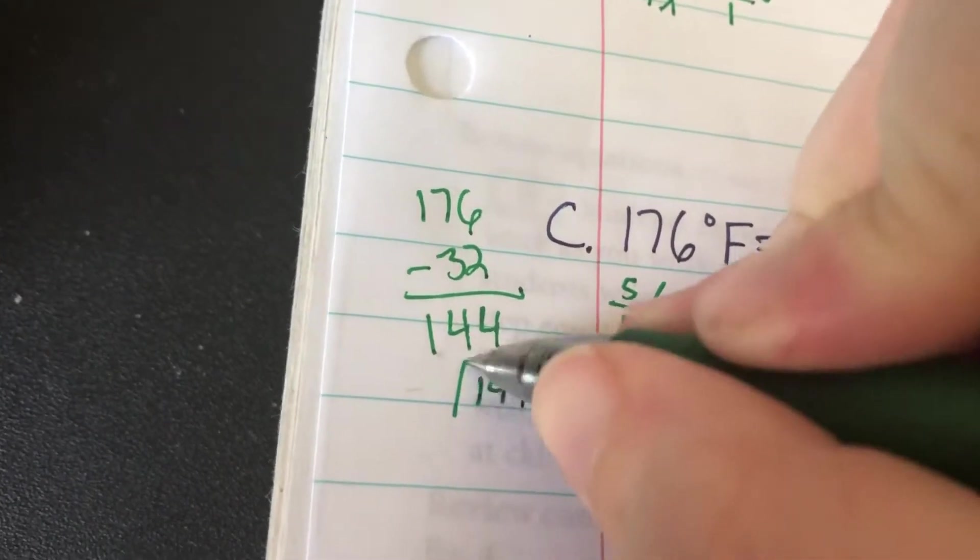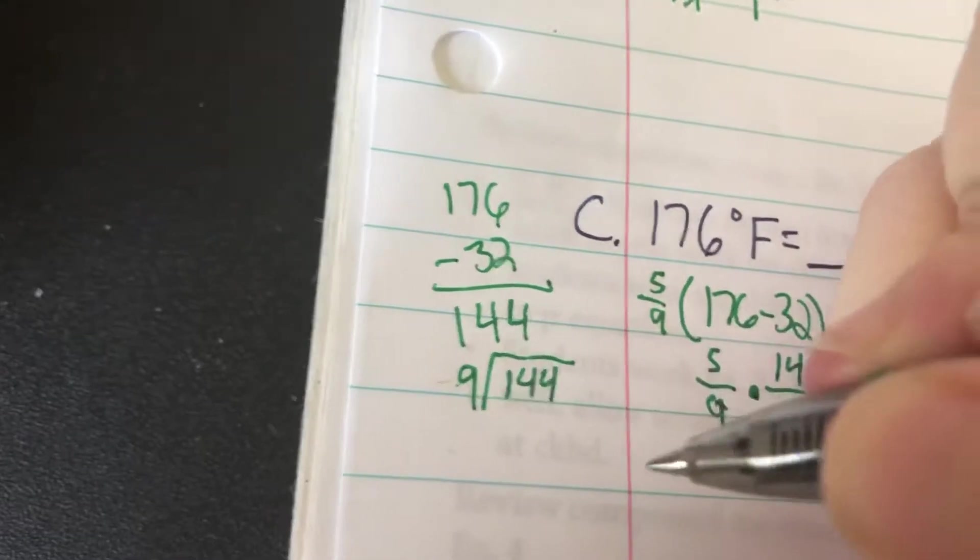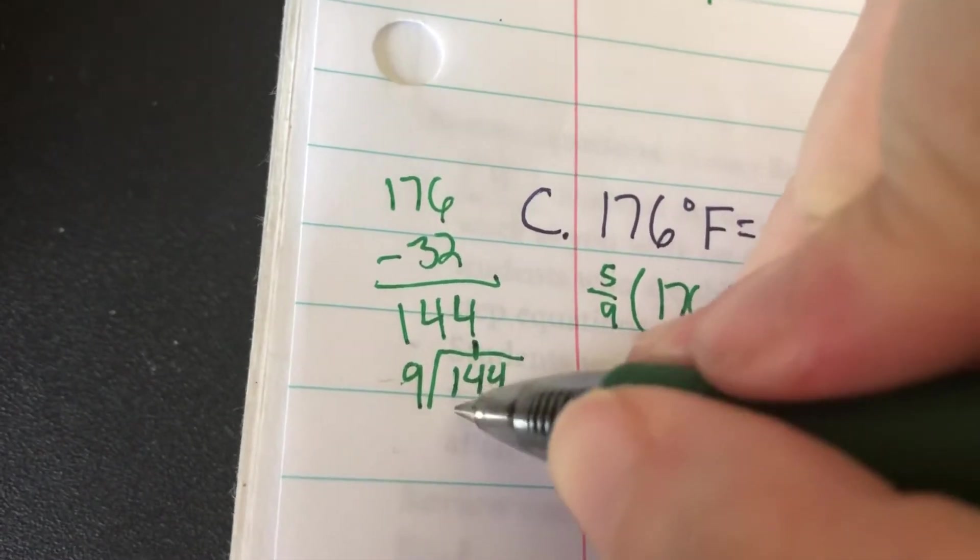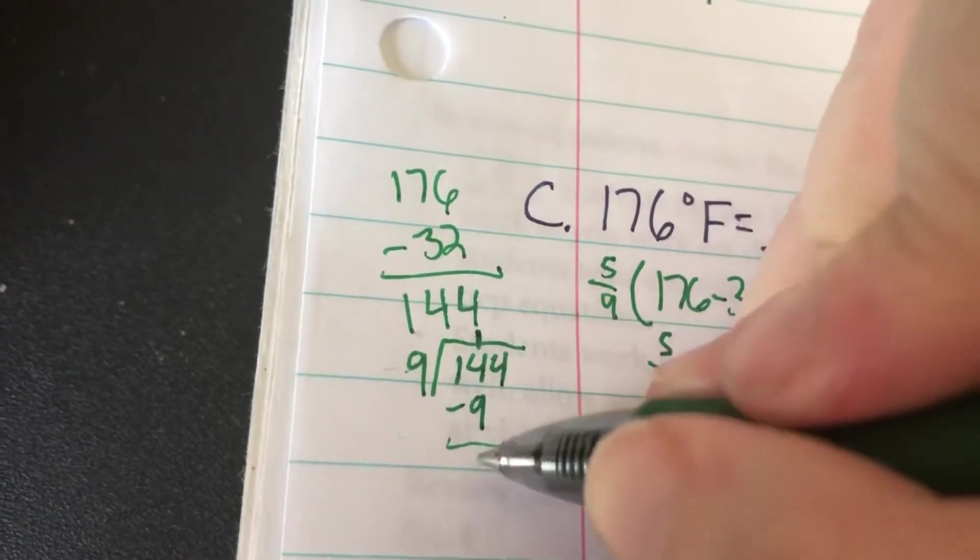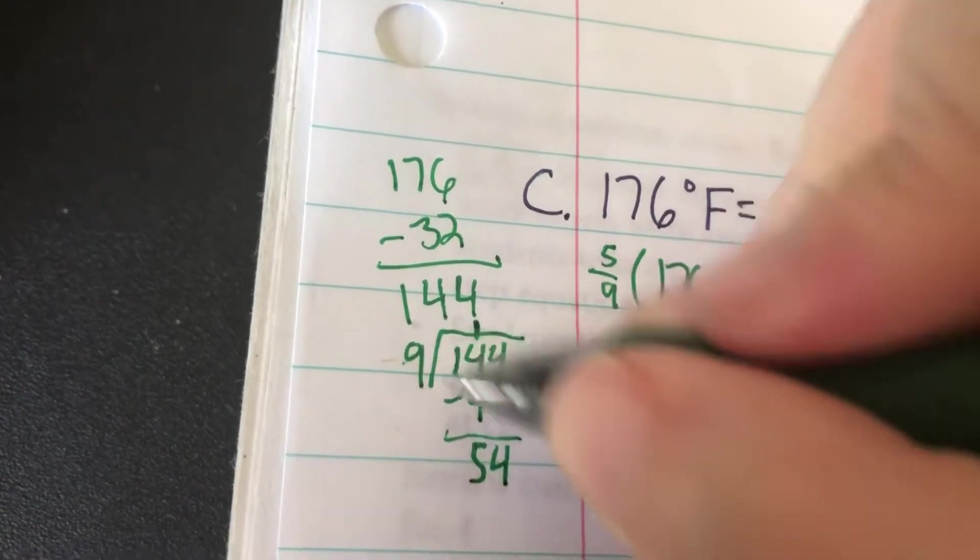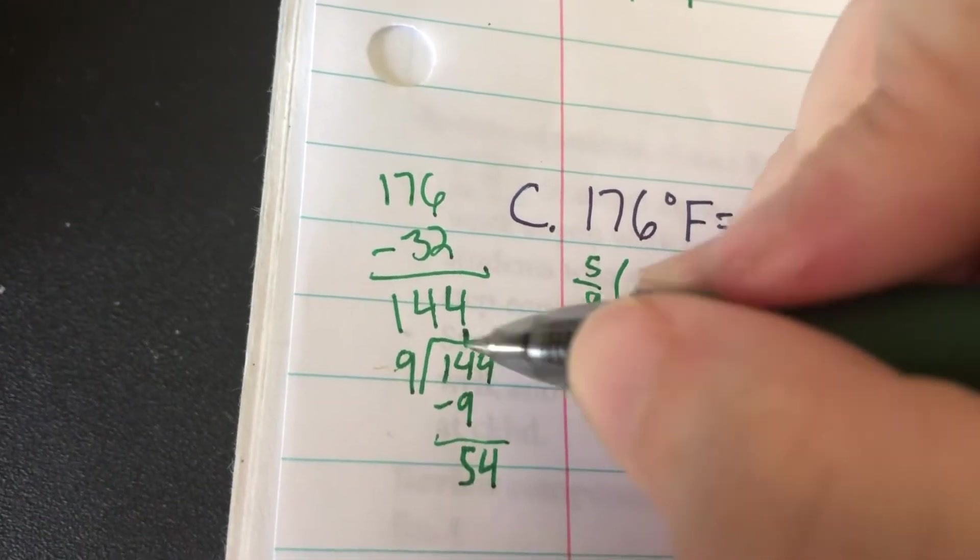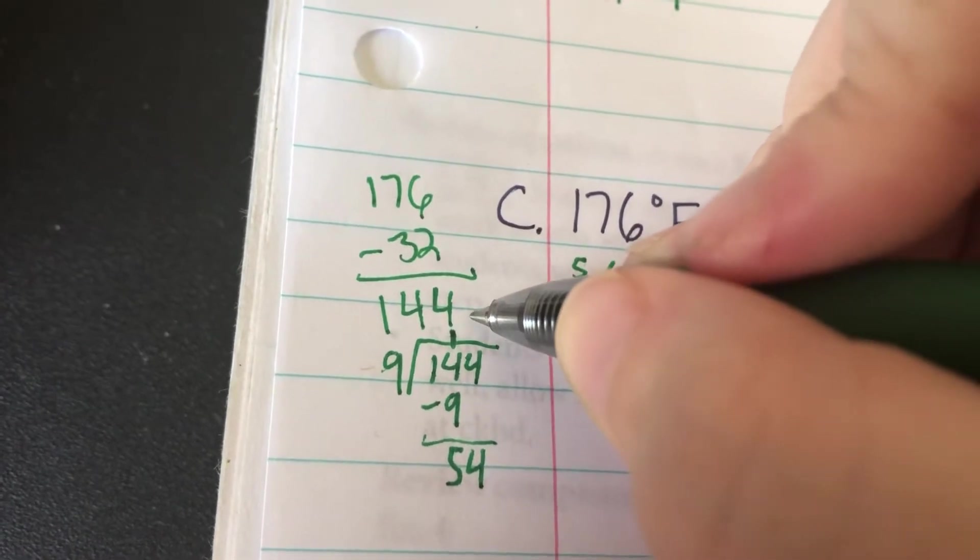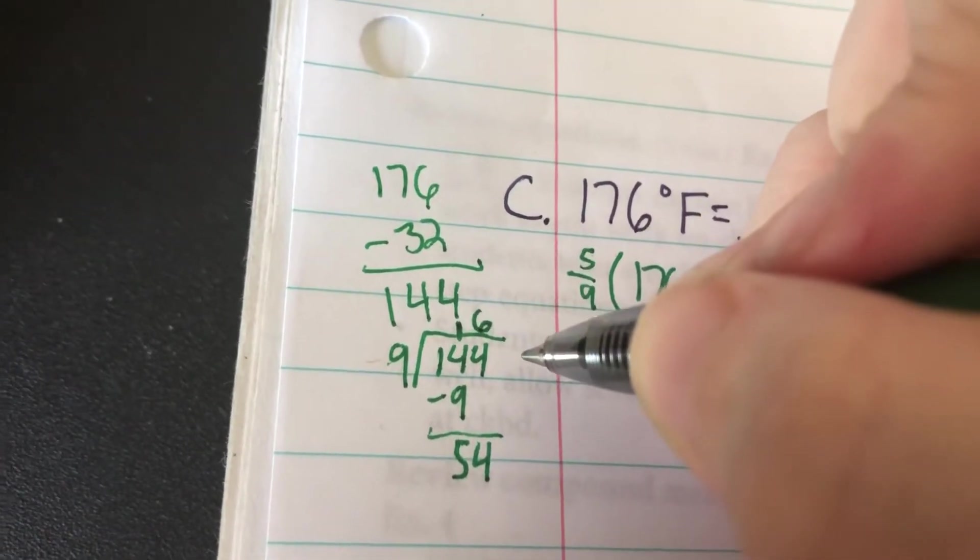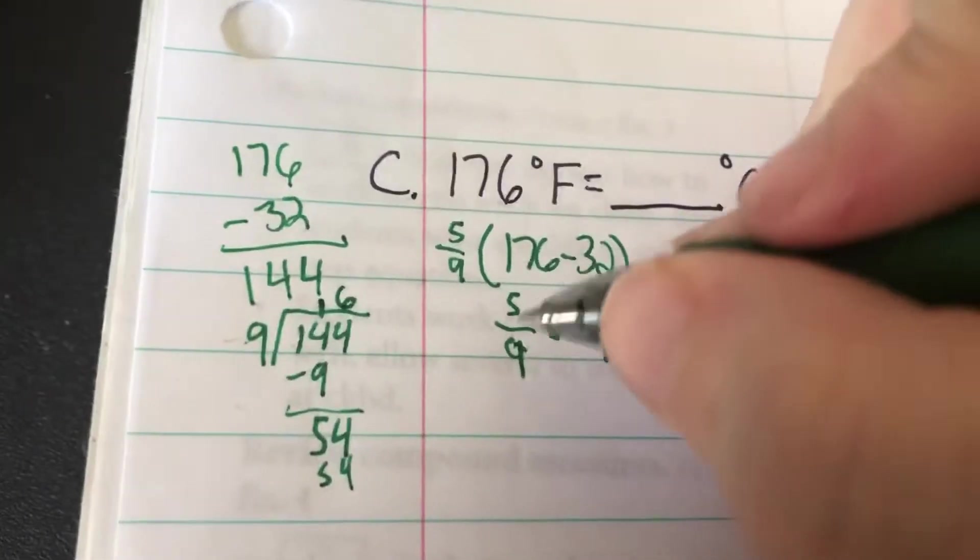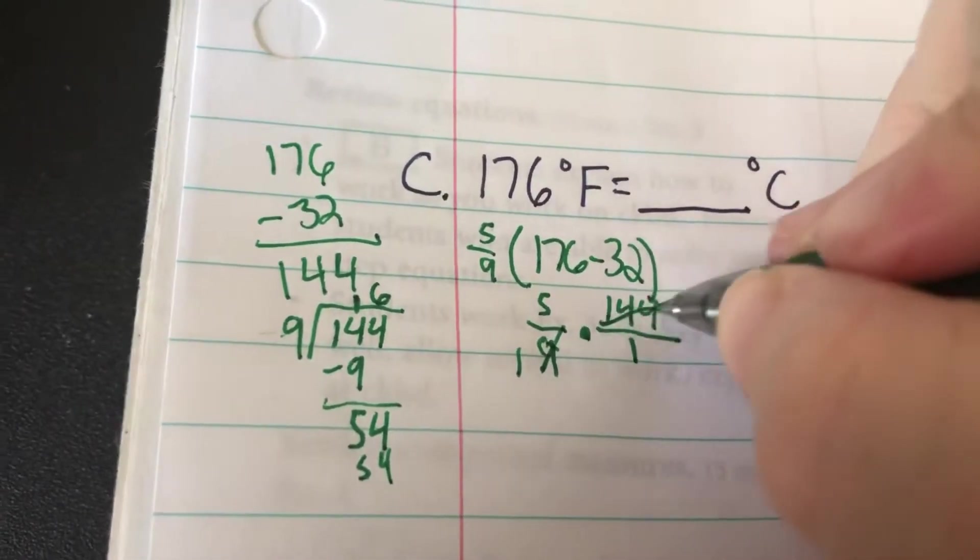144 on the inside, 9 on the outside. 9 into 14 goes one time. That is 9. Subtract, 5, 4. 9 into 54, that would be 6. 6 times 9 is 54. So this is 1, this can become 16.